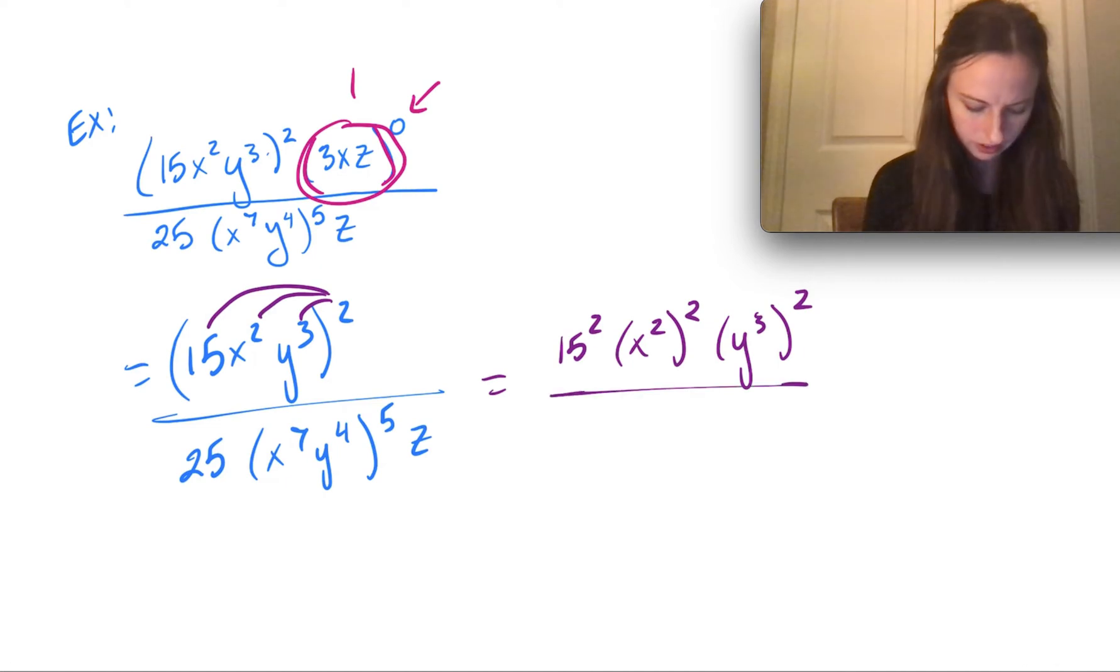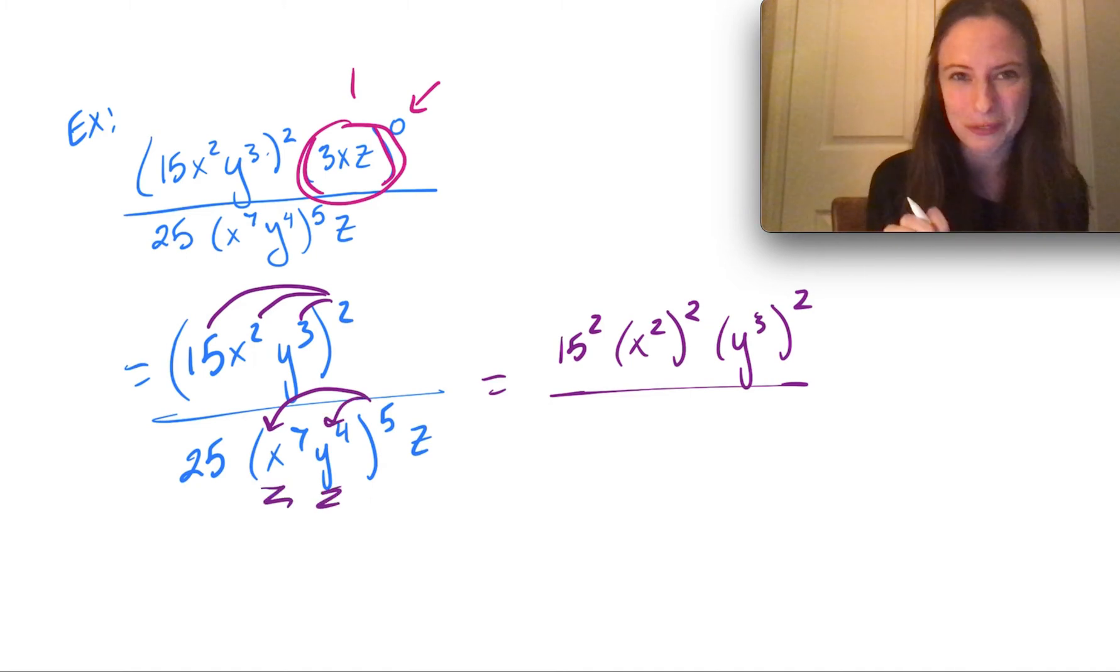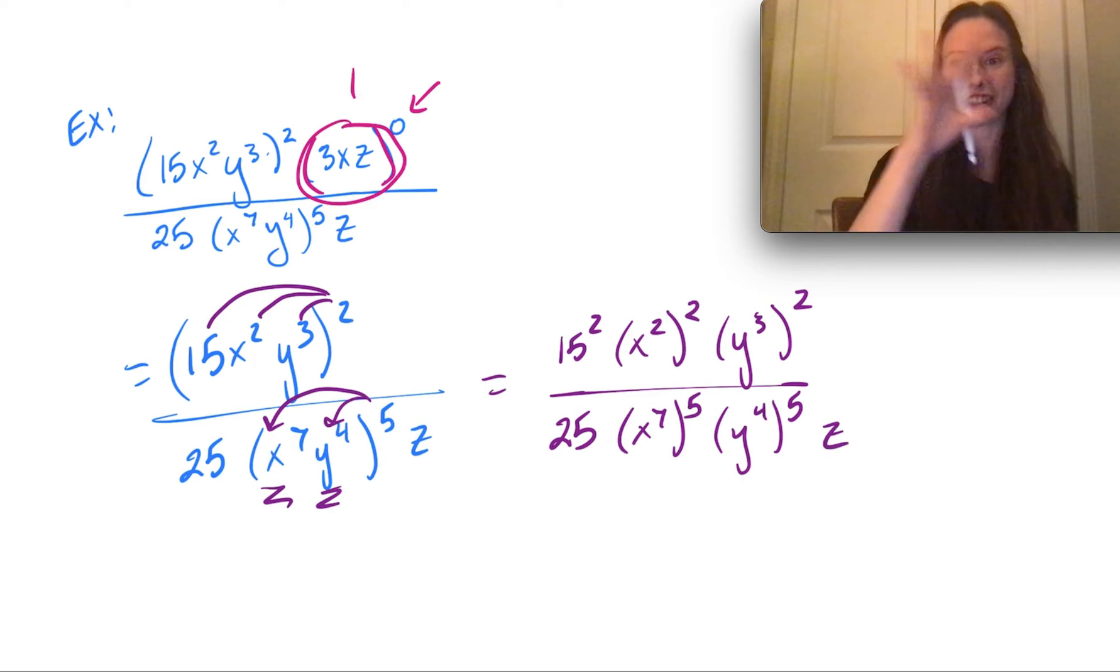And then in the denominator, be very careful and only distribute that exponent to the stuff inside the parentheses. So that 5 isn't going to reach all the way over to the 25. It's only going to go to the x to the 7th and to the y to the 4th, because those are the two things inside the parentheses. So we've got that 25 just chilling on the outside with x to the 7th all to the 5th power, y to the 4th all to the 5th power, and then that last little lonely z at the end here. So I'm kind of doing a bunch of things all at once here, but the main thing is I've distributed the exponent 2, I've distributed the exponent 5. Now I'm in a good place to keep on simplifying.